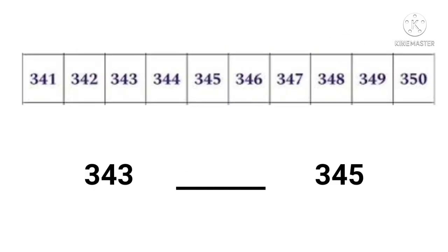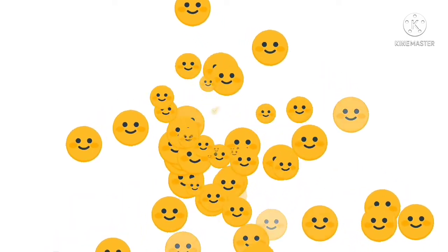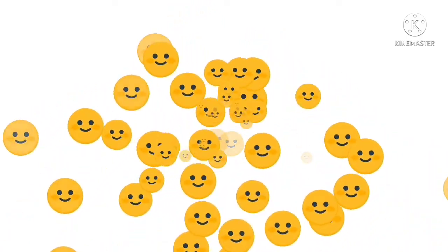Now the next one: what number comes in between three hundred and forty-three and three hundred and forty-five? Yes, it is three hundred and forty-four. Children, hope you have guessed the numbers properly.